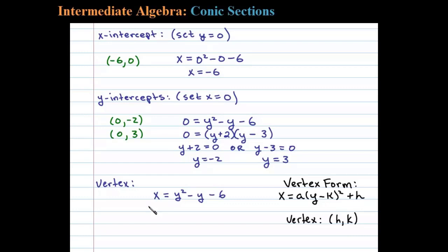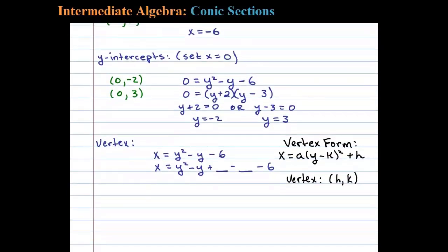Now to do that we'll begin by making room for the constant that completes the square, so we'll be adding some number and then at the same time subtracting the same exact number. Now the number that completes the square, remember, is b over 2 squared.